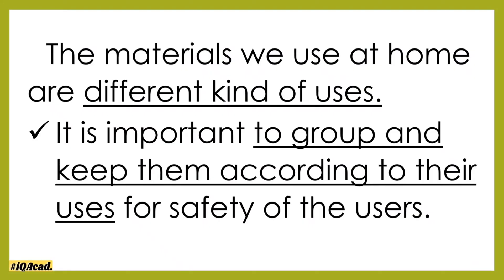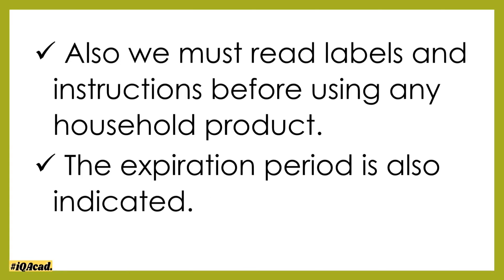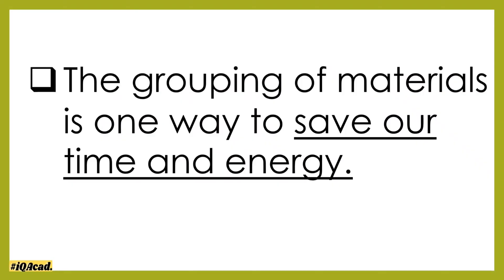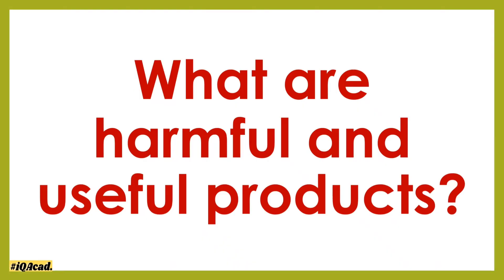The materials we use at home have different kinds of uses. It is important to group and keep them according to their uses for the safety of the users. Also, we must read labels and instructions before using any household product. The expiration period is also indicated. The grouping of materials is one way to save our time and energy. So, what are the harmful and the useful products at home?